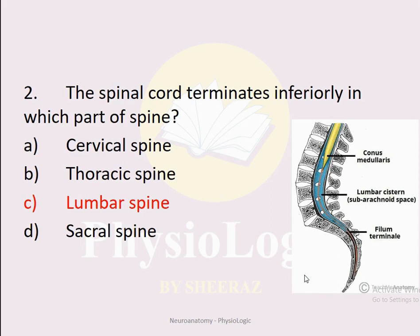You need to remember that the spinal cord does not travel all the way down to the sacral spine. It terminates in the lumbar spine at the L1-L2 level. The point where it terminates is known as conus medullaris. Below it, the collection of nerve fibers is known as cauda equina, and the thin filament connecting the spinal cord to the coccyx is known as filum terminale.